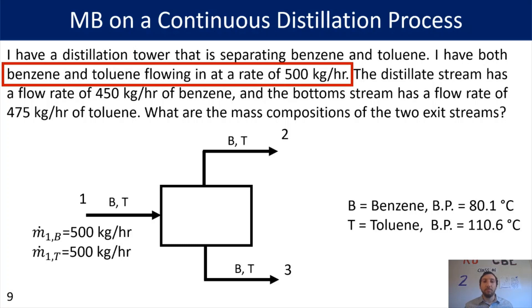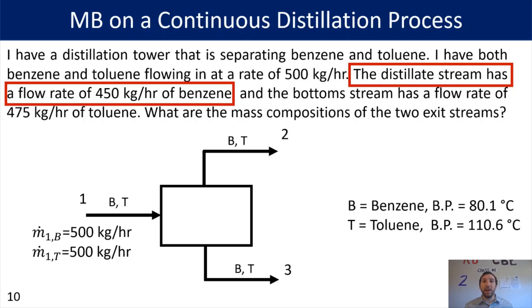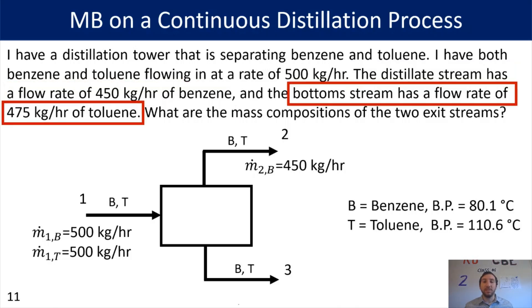Because there was no special information given about what components are in the different streams, we're going to say that each stream has both benzene and toluene, since there was no perfect separation. Breaking down the word problem: M1B and M1T are both 500 kilograms per hour. M2B is 450 kilograms per hour. And in stream 3, toluene is flowing out at a rate of 475 kilograms per hour.